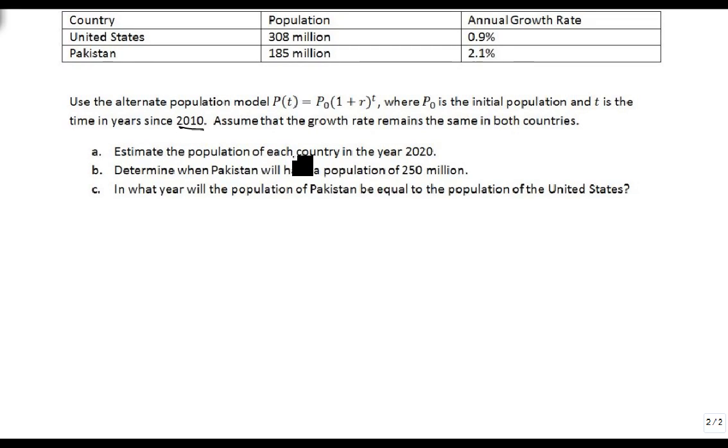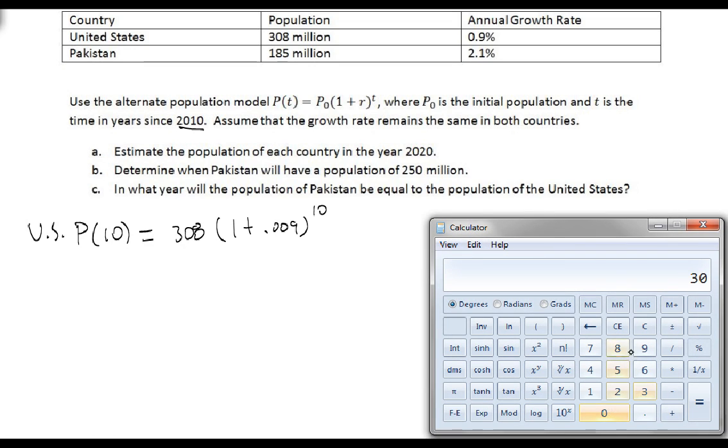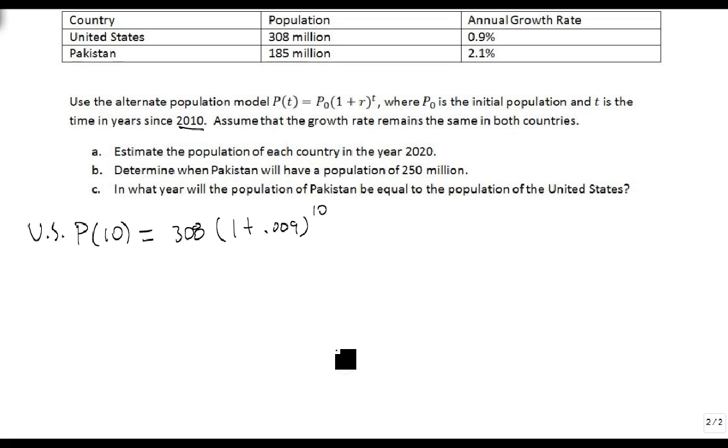We're going to look at the population in the year 2020. For the US, 2020 is 10 years after 2010, so that's going to be 308 times (1 + 0.009) raised to the 10th power. We'll get out our calculator and do 308 times 1.009 raised to the 10th, and it says there will be 336.87, so let's round it to 337 million. So in 2020, there should be 337 million people in the US.